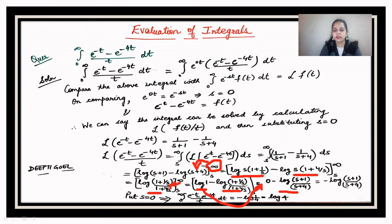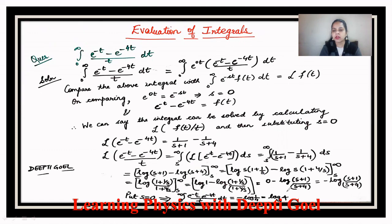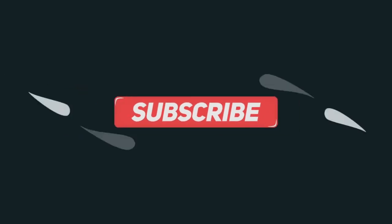After applying the upper limit we have 0 minus log[(s+1)/(s+4)]. Now substituting s = 0: log[(0+1)/(0+4)] = log(1/4) = −log(4), and with the negative sign it becomes log(4). So the value of the integral is log(4).